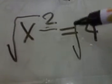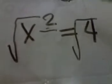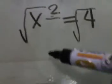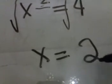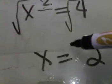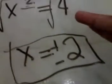There is still a square, so we need to extract the square roots from both sides. It should be x is equivalent to positive or negative 2.